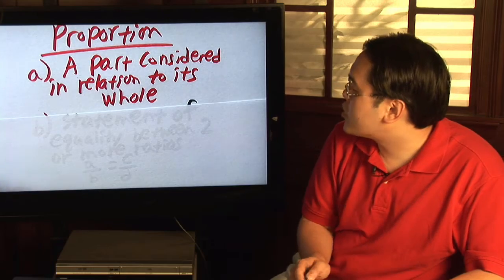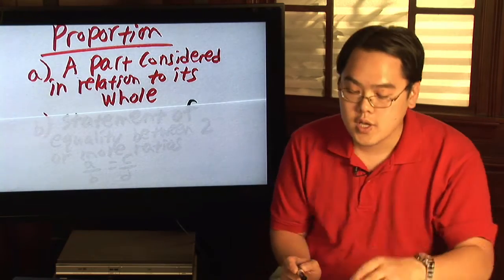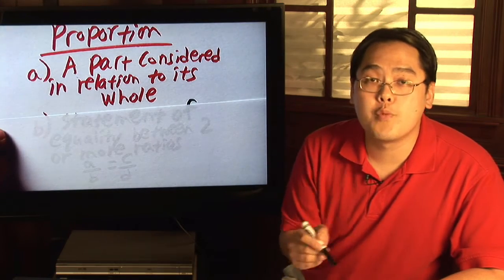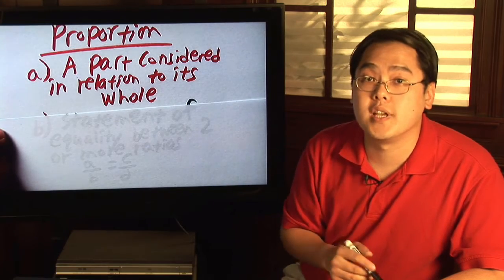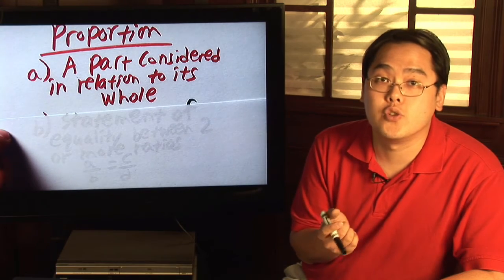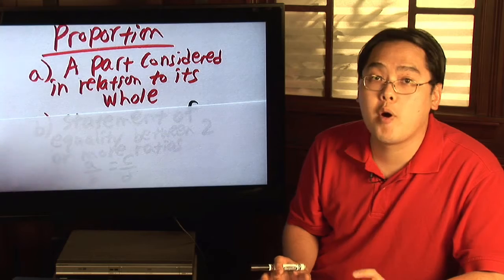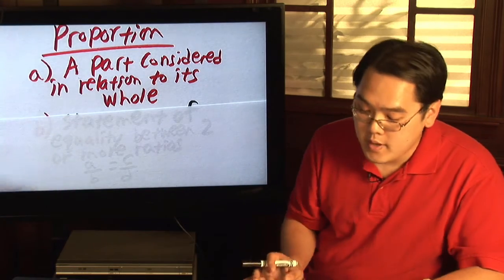The first definition of a proportion is a part considered in relation to its whole. In other words, if you have a part of something, whether it be a room, you can compare the room to the entire house, or you can have one glass compared to the entire set of glasses. So one definition could be how a part is compared to the entire whole for which it's a part of.